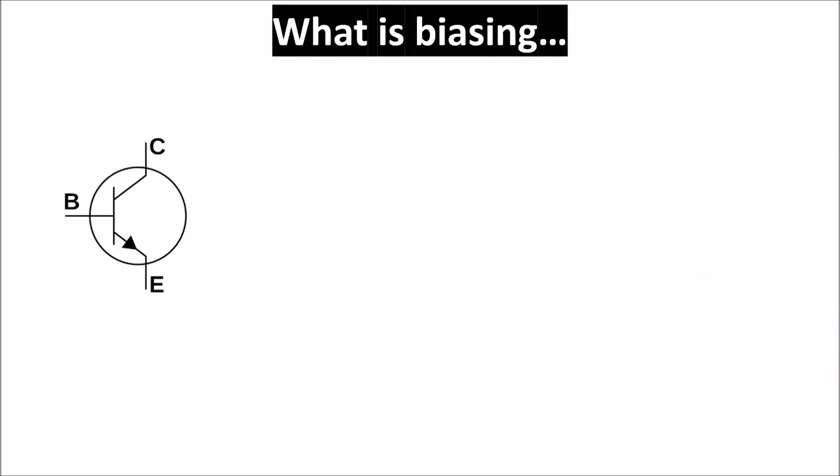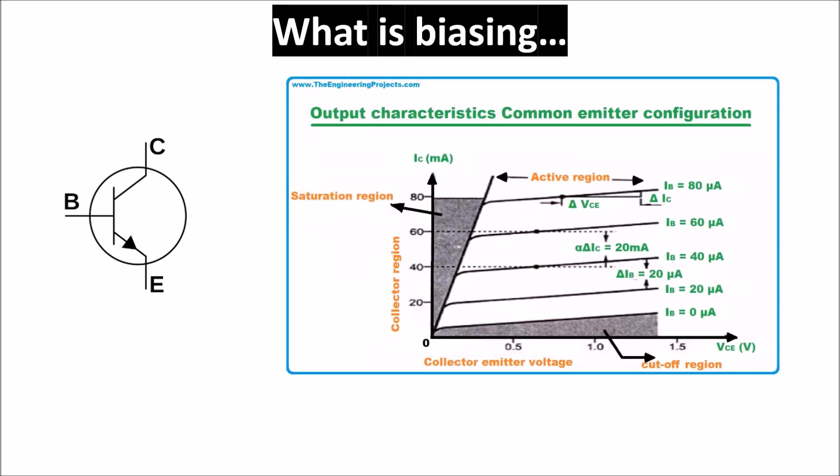We know that a BJT transistor has different working modes. This is the IV characteristic of an NPN BJT in which we can see the saturation, the cutoff, and the active region. If you want to use a BJT as a switch, you want to work in the saturation and cutoff region. But if you want to use a BJT as a small signal amplifier, you want to work in the active region.